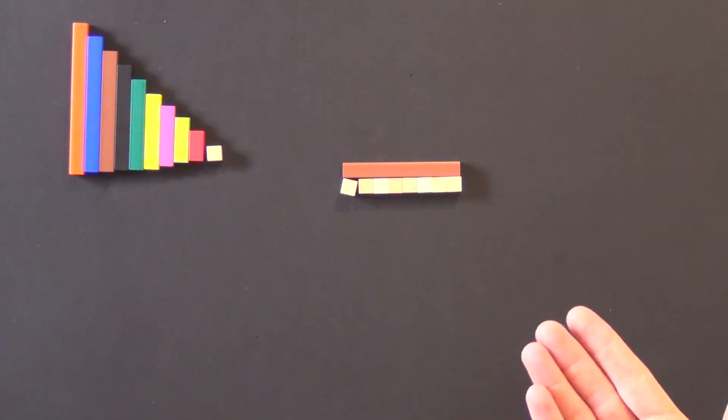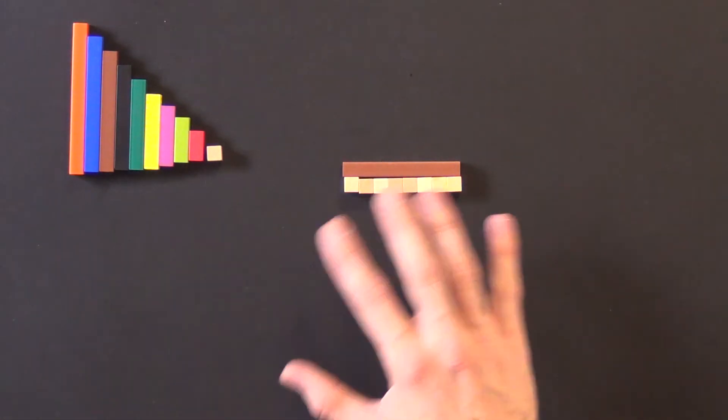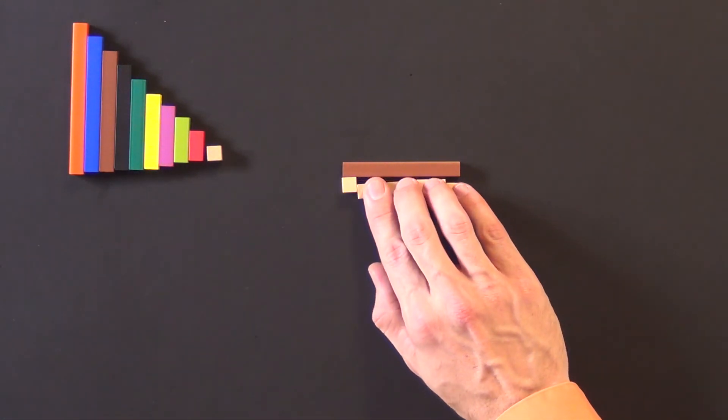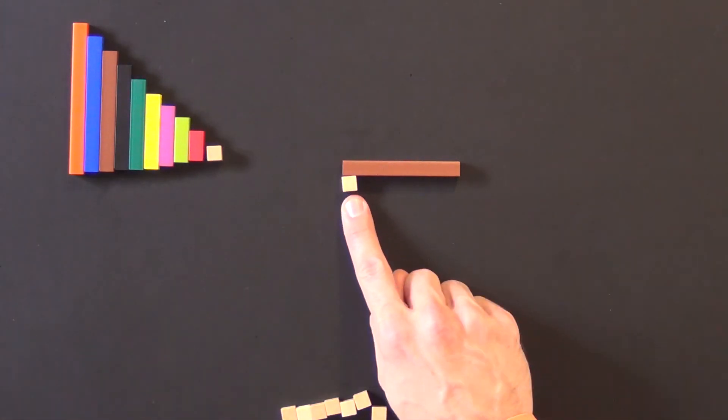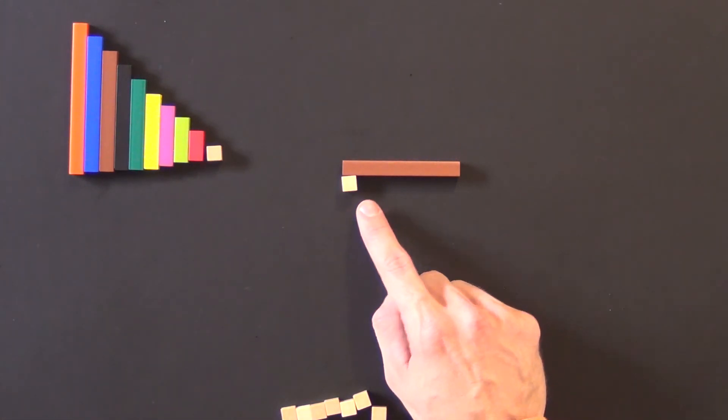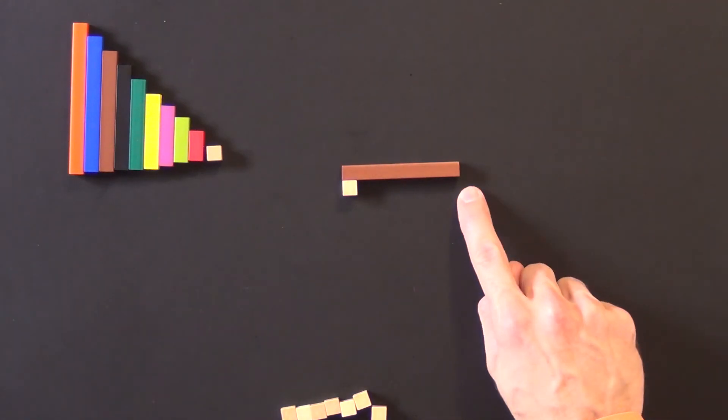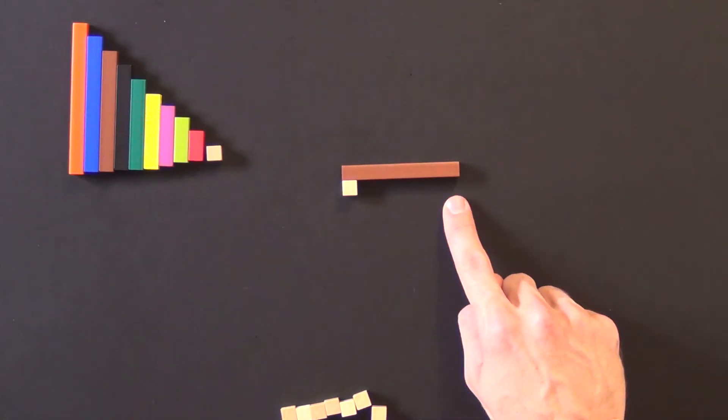Leia has completed three-eighths of her chores. So to walk students through this, I might actually have them just pull back and explain that the one is a unit fraction, one-eighth of the brown or one-eighth of the whole.